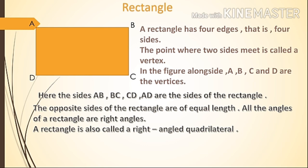All the angles of a rectangle are right angles. The rectangle is also called a right angle quadrilateral, meaning kaat kon saw kon. So the other name for rectangle is right angle quadrilateral.